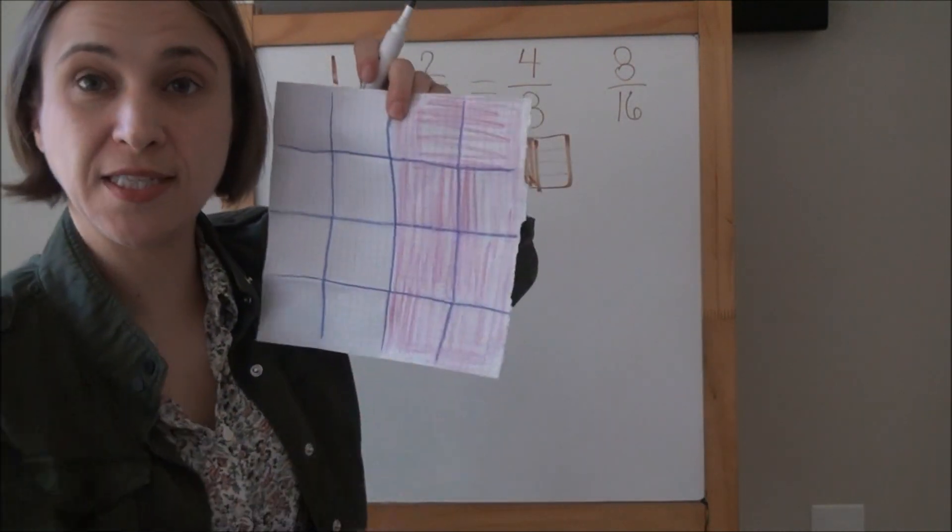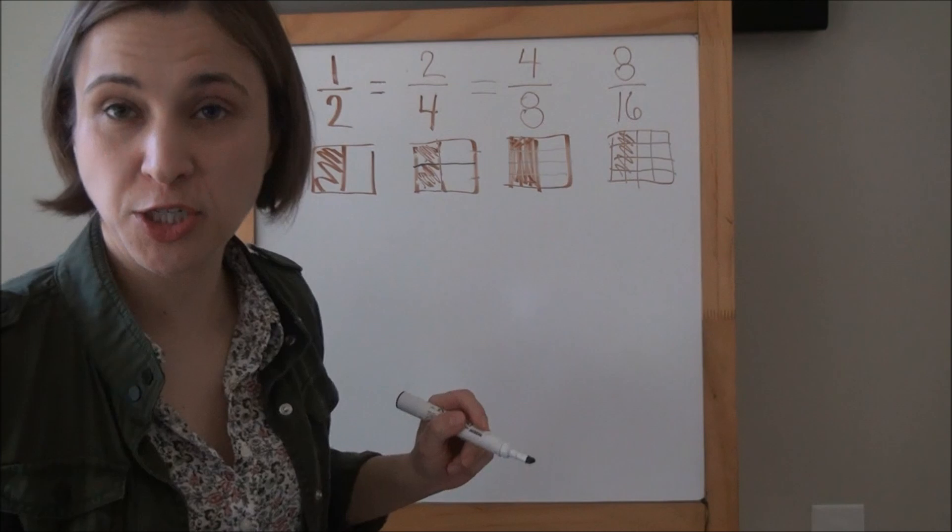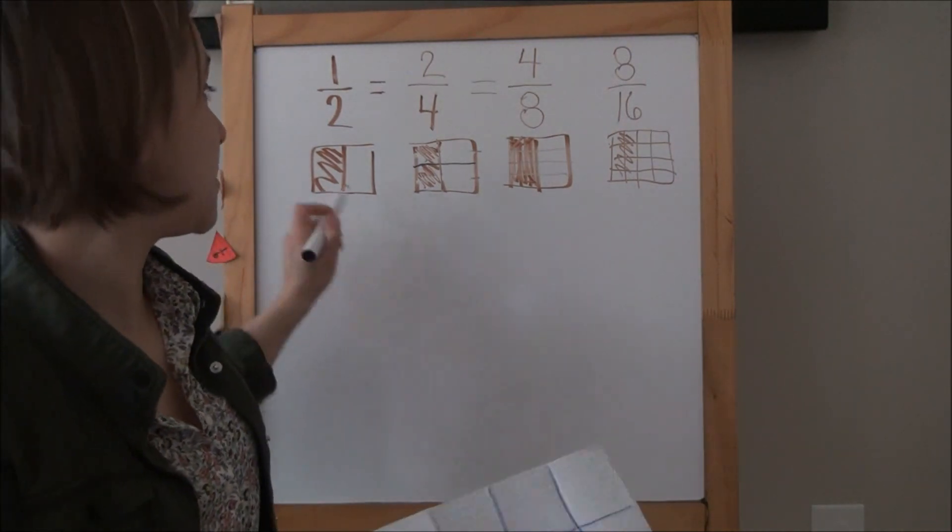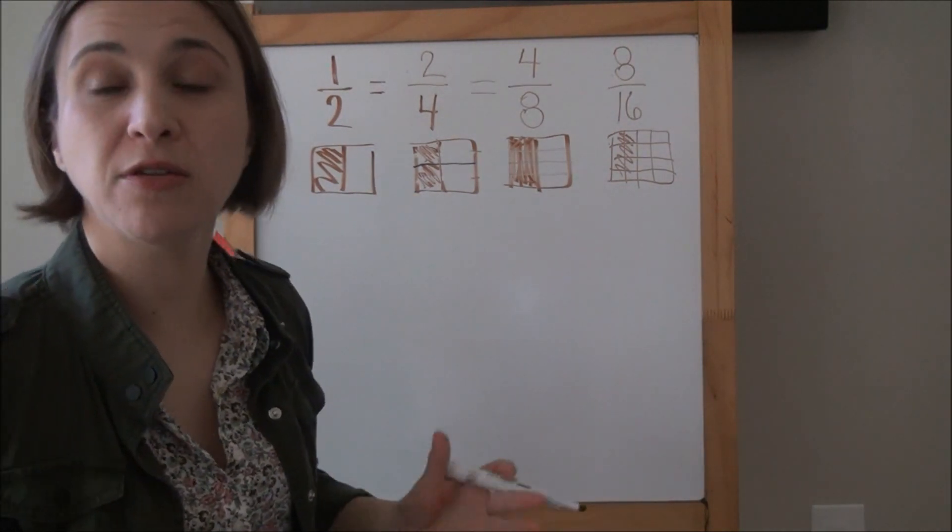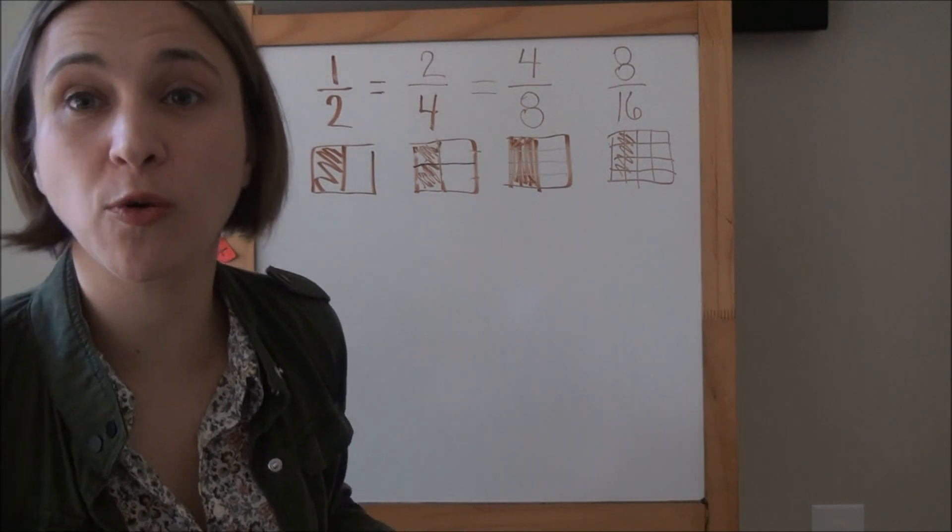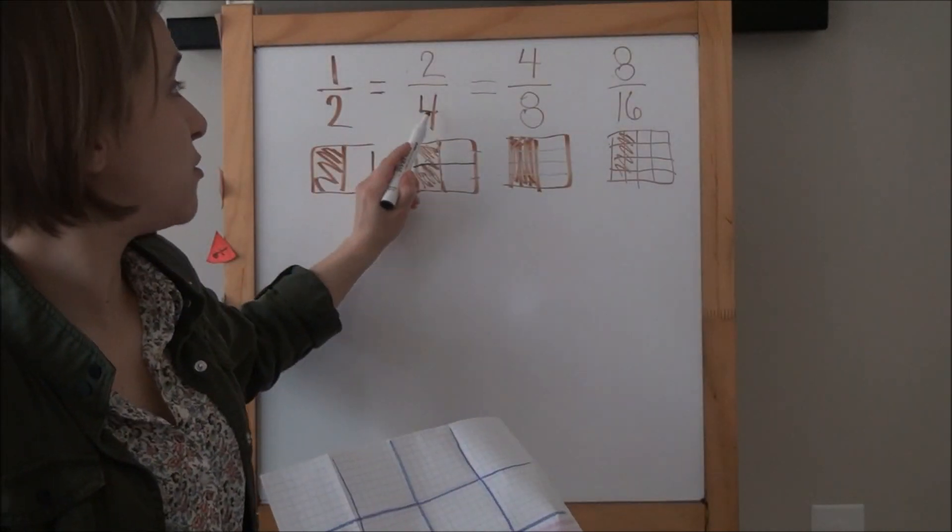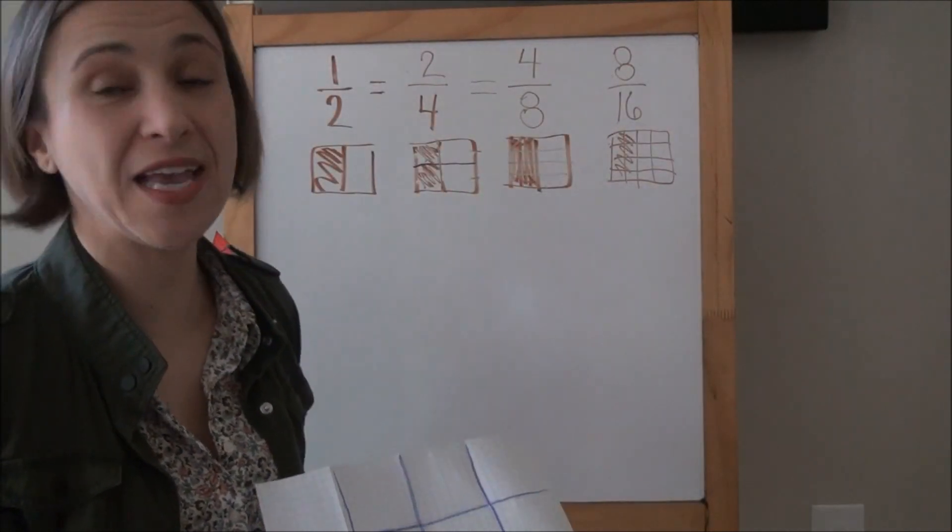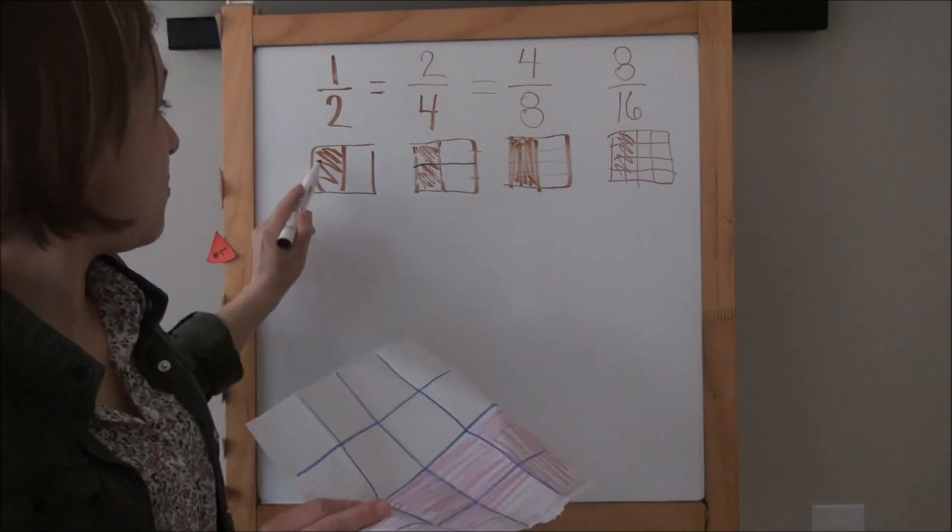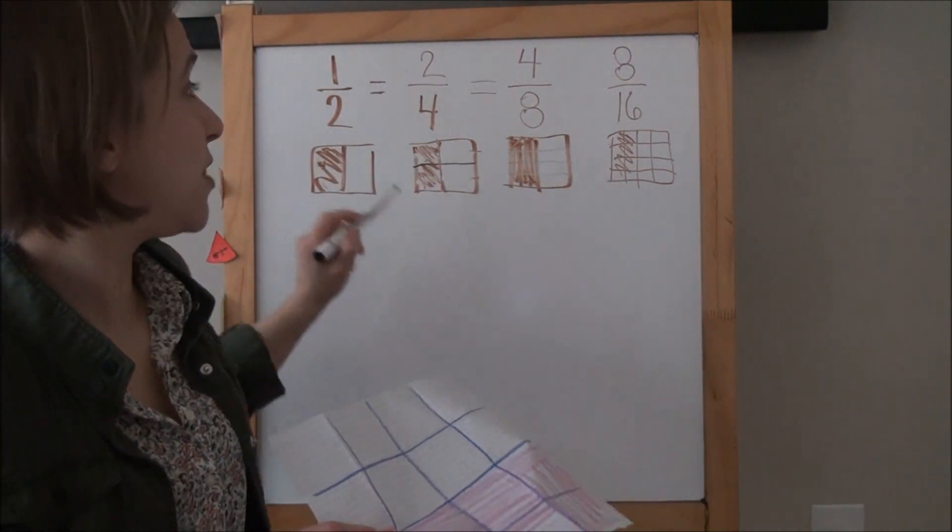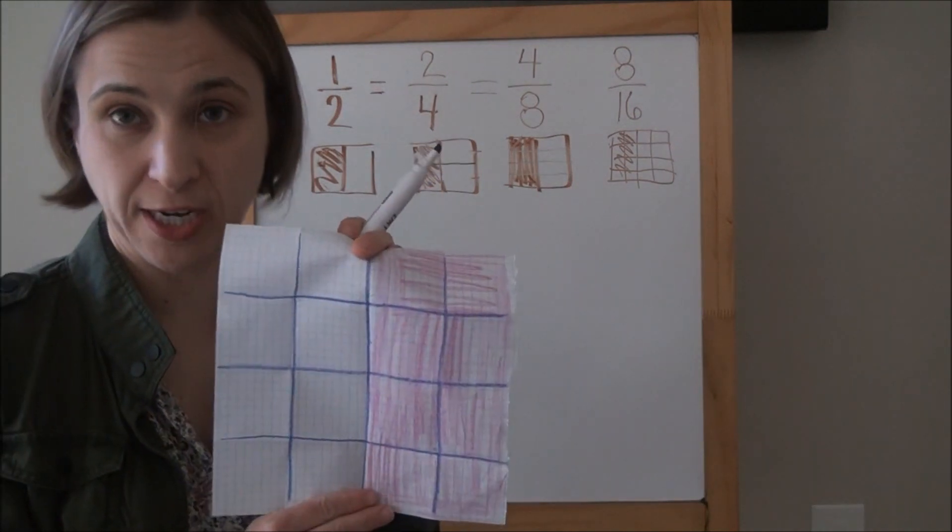When two or more fractions can be used to represent the same amount, those fractions are equal or equivalent. Because one-half, two-fourths, four-eighths, and eight-sixteenths can all be used to represent the same amount, these are all called equivalent fractions.